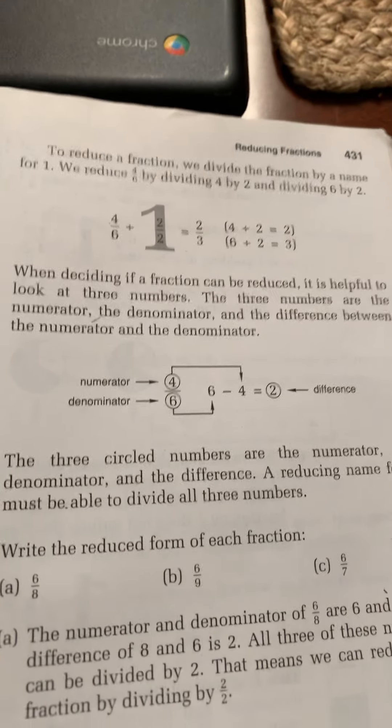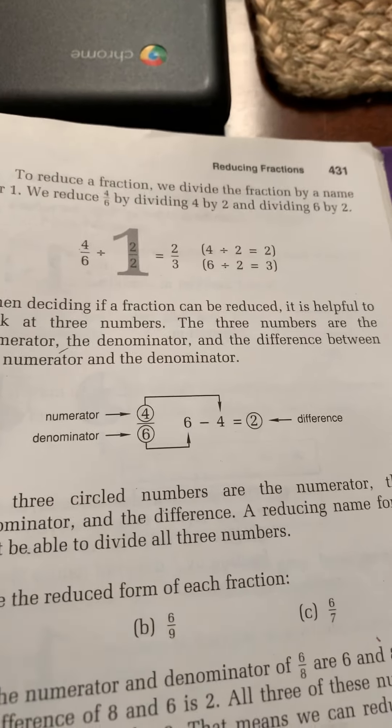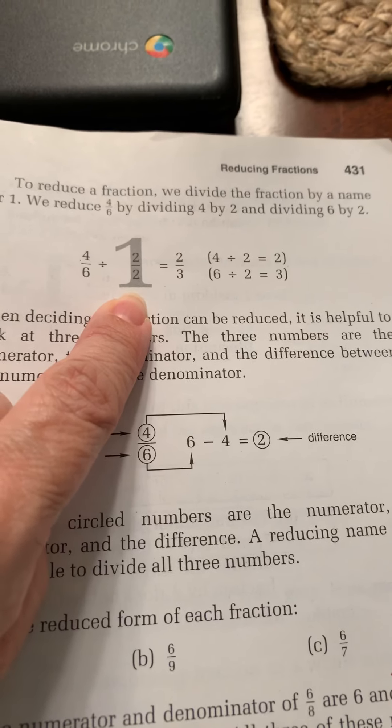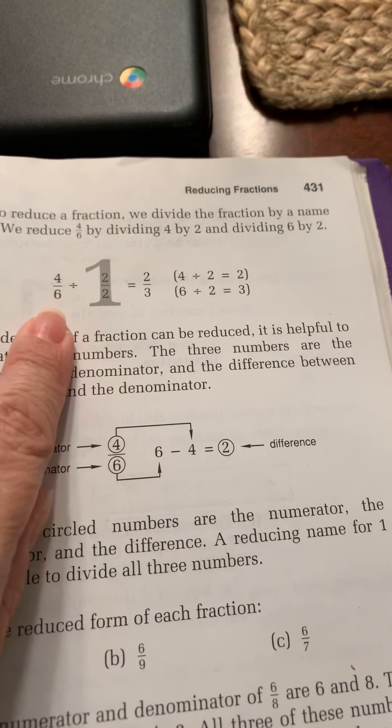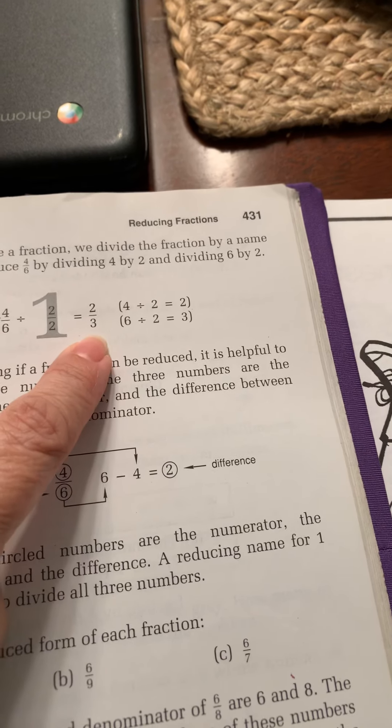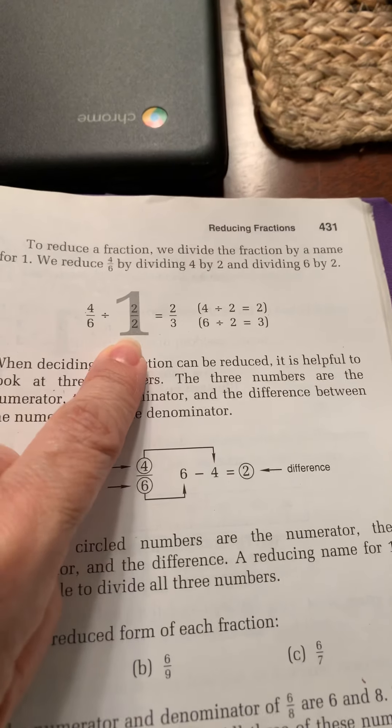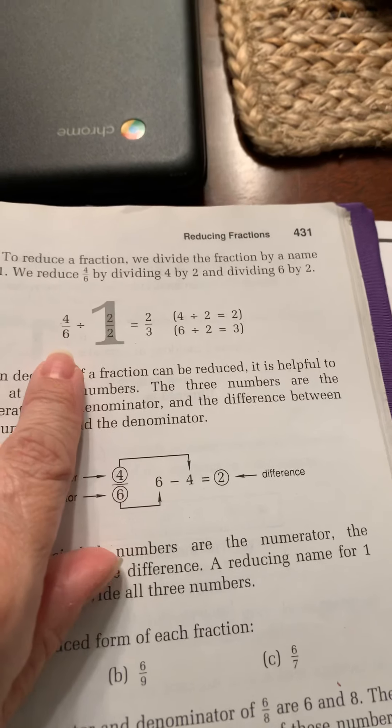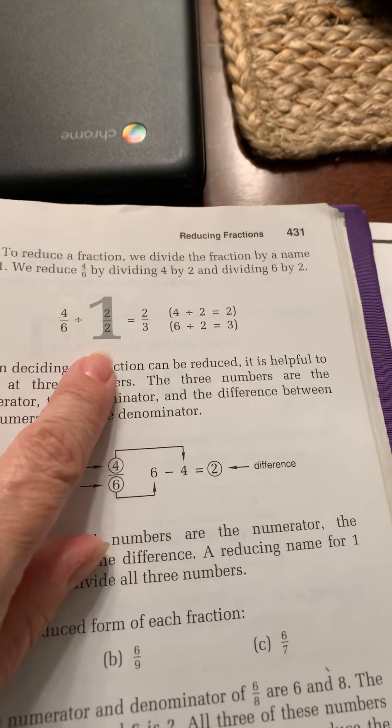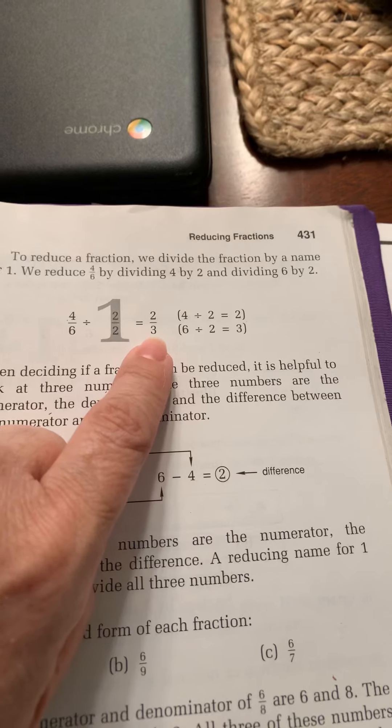To reduce a fraction, we divide the fraction by a name for one. We reduce four-sixths by dividing four by two and dividing six by two. So I showed you guys about multiplying to get the fraction bigger, but this is how to get it smaller. You divide, so four divided by two is two, and six divided by two is three. But what you're doing is you're actually just dividing by one, because two halves is the same as one whole. And so you're not changing the value of this number. When you divide by one, you still get the same, four-sixths divided by one is still four-sixths. But this is just a reduced way or a simpler way of saying four-sixths.